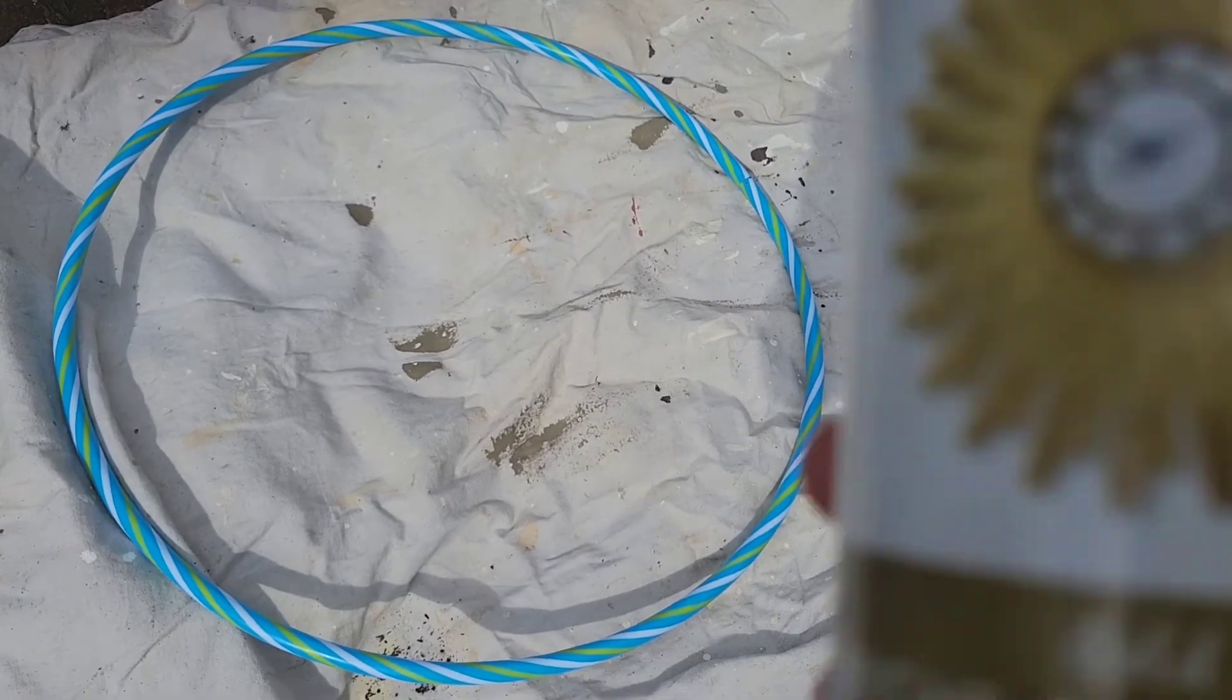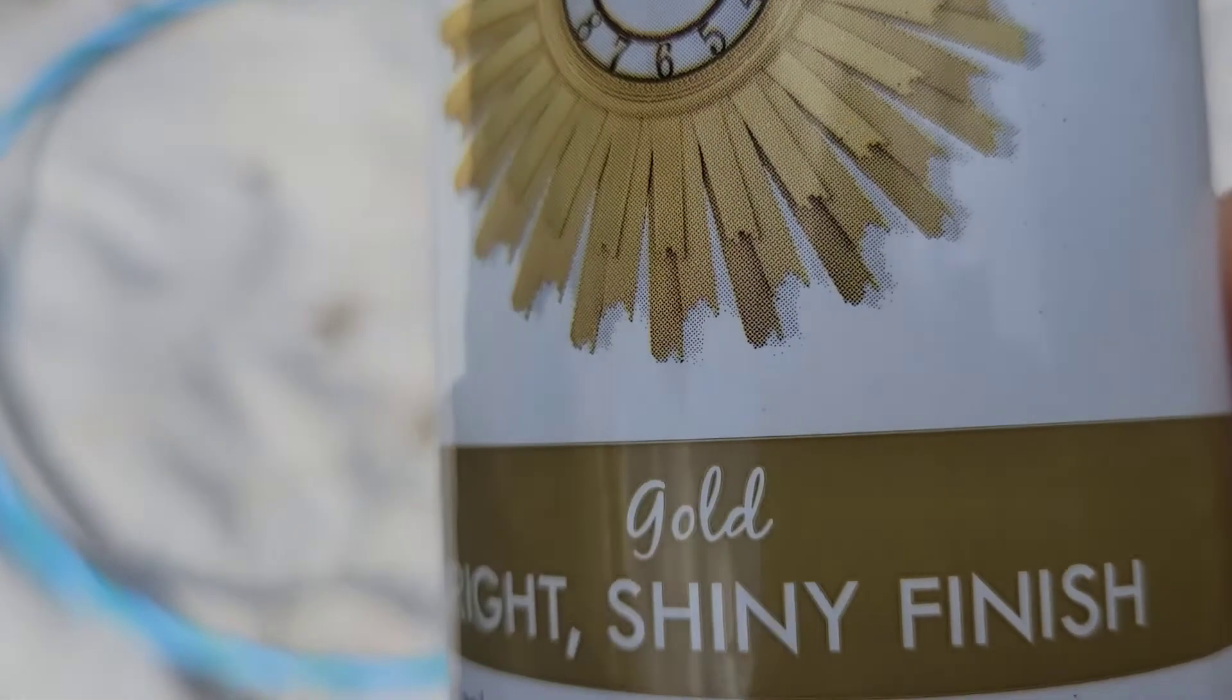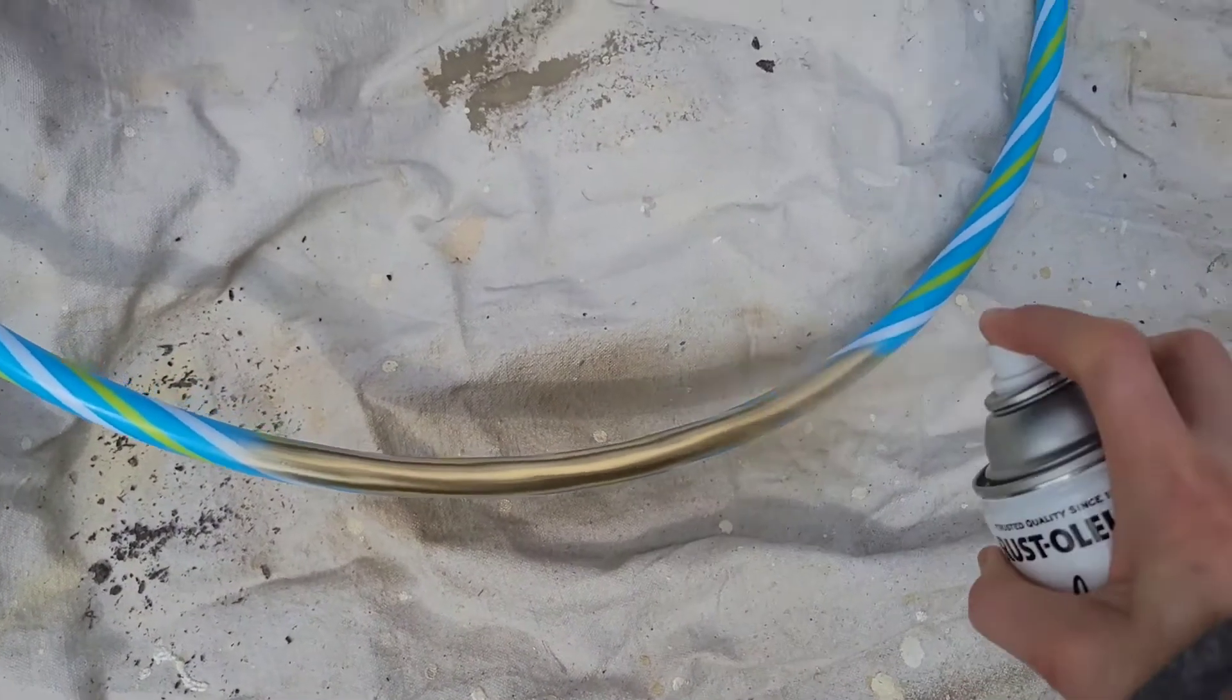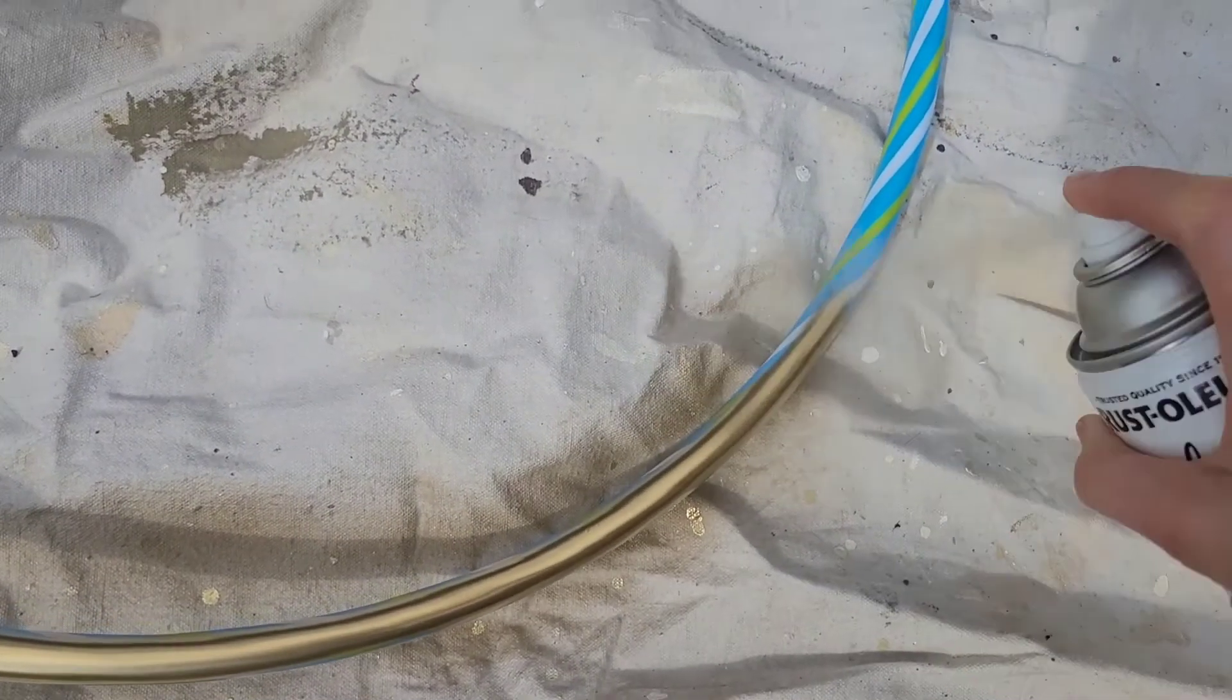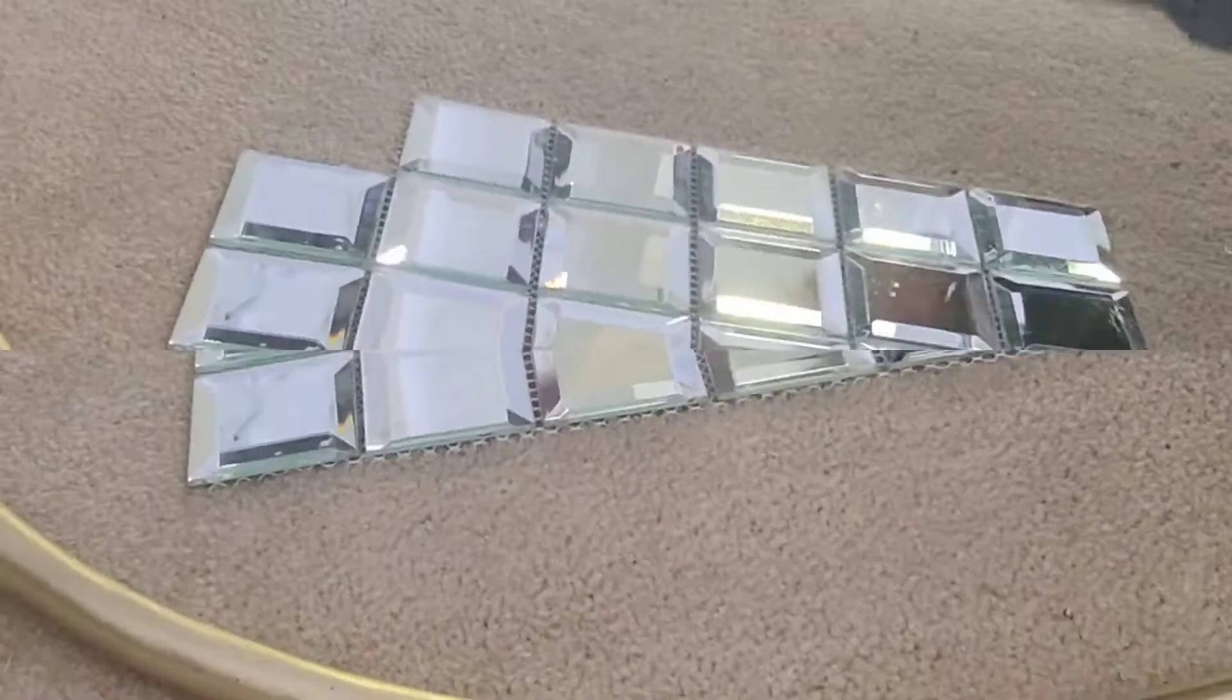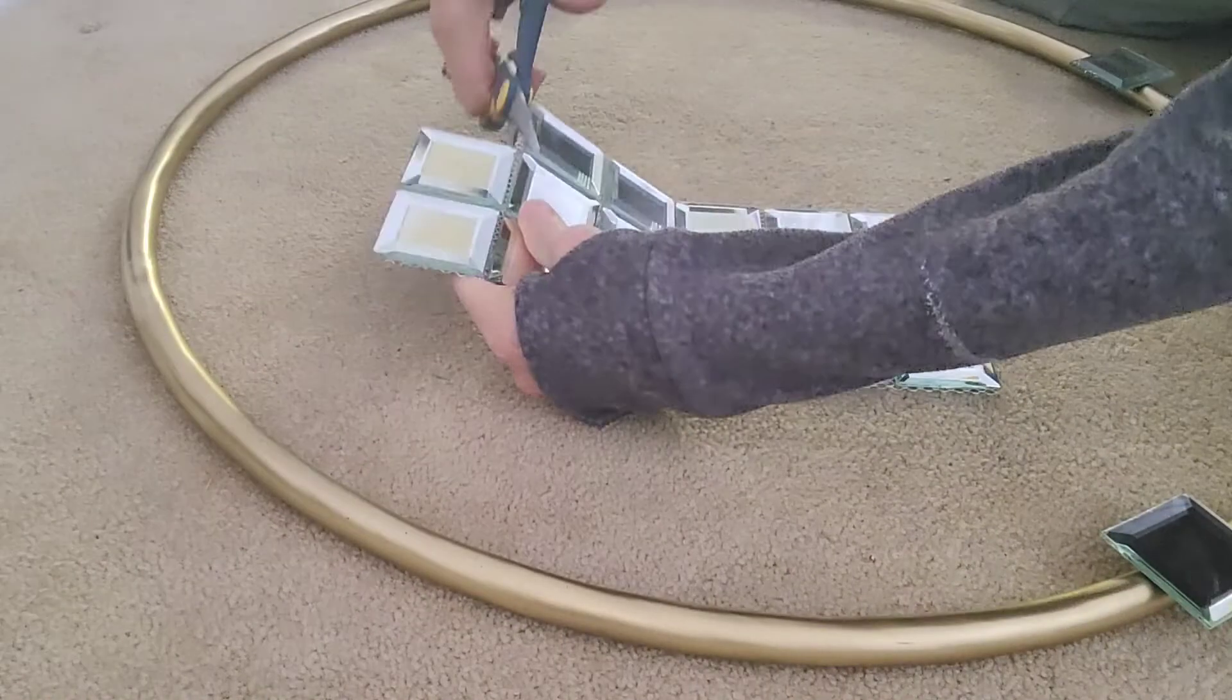Hi everyone, today's project is a super glam, easy DIY wall clock. I'm starting out by spray painting a hula hoop, which I got at Five Below on summer clearance for two dollars, in metallic gold.